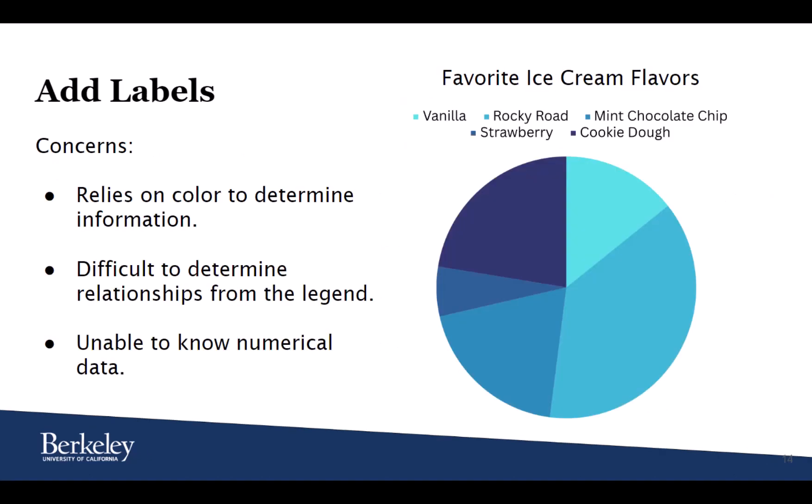Finally, we can always add labels to our charts. In this example, we have a pie chart showing a group of people's favorite ice cream flavors. This chart again relies on color to show users the data, is difficult to understand in relation to the legend, and is unable to give us numerical information.